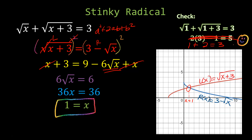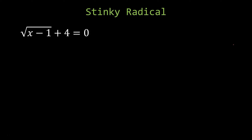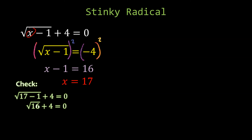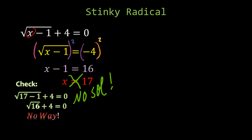One more — look at this equation. It looks like an onion, so we peel the layers: subtract 4, square both sides, add 1, and x = 17. But before boxing the answer, check it. Plugging in 17: 4 plus 4 equals 0? No way — that's not going to happen. So x = 17 is not a solution. There is no solution.